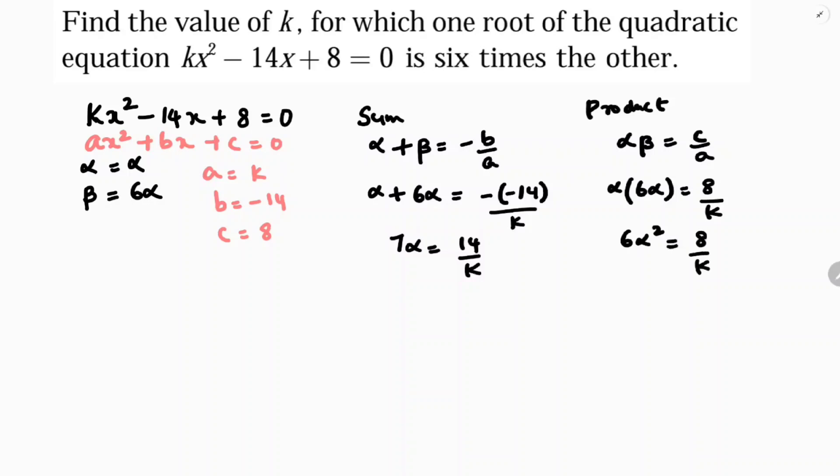Now if you observe here, I can cancel with 7 tables: 7 times 1, 7 times 2. So alpha value is 2/k.